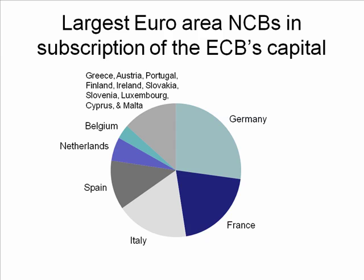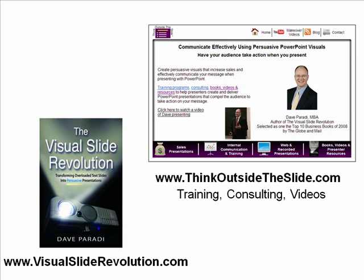Those are really some of the key things we want to think about when we're given all this detailed, broken-down data. We need to make it understandable for the audience — they need to be able to see it in context and figure out what it means, because the original slide would be very hard to understand with all the detailed data there. If you want more information on the book, go to visualsliderevolution.com. More information about my workshops, consulting, videos, and other resources, go to thinkoutsidetheslide.com.